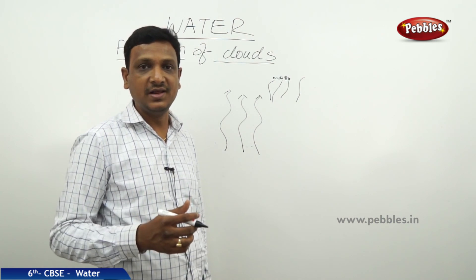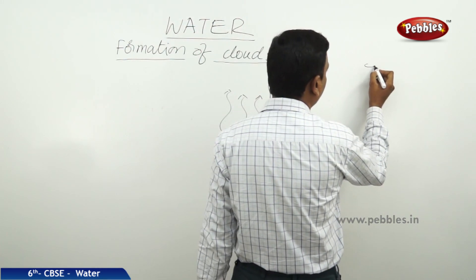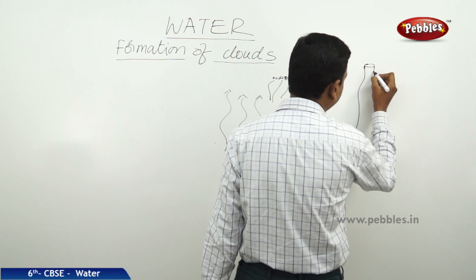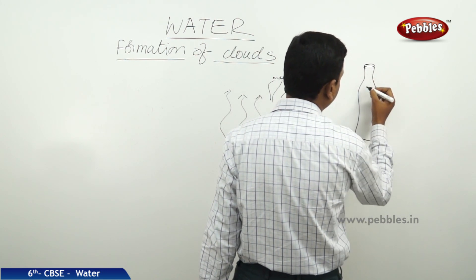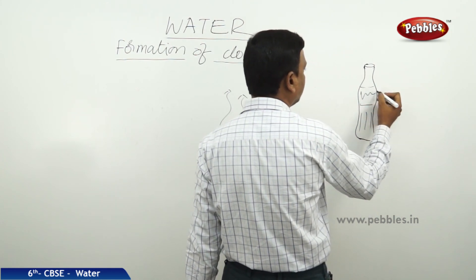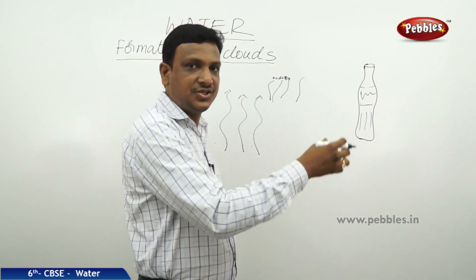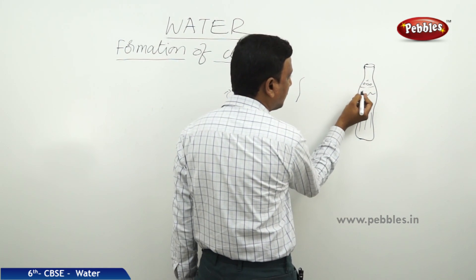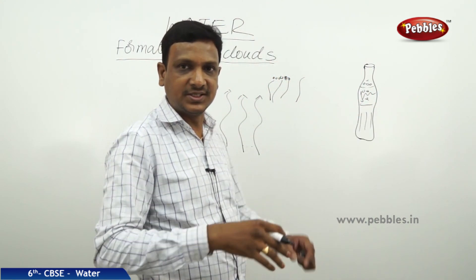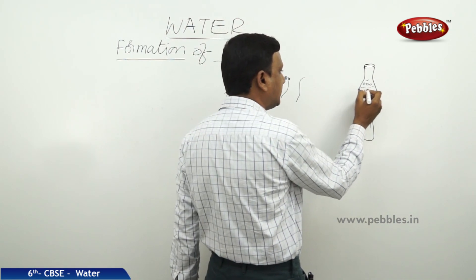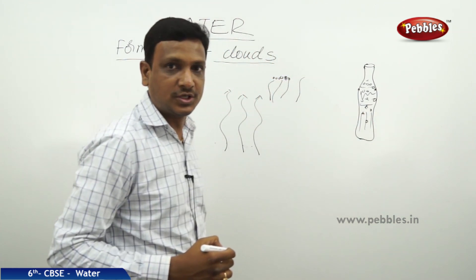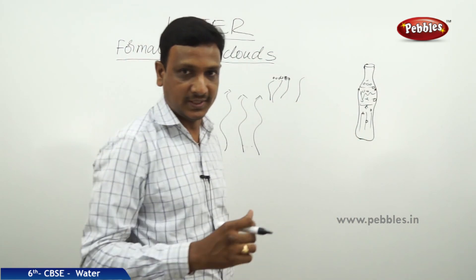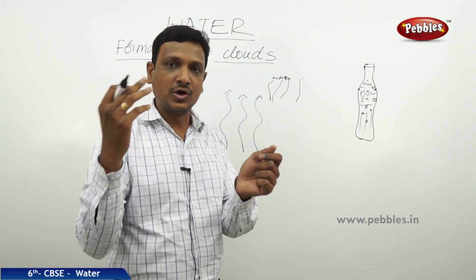How do we know this? We can understand it through an experiment. Have you seen what happens when you take a chilled soft drink bottle out of the refrigerator and leave it outside for some time? You find that water droplets collect on the outside of the bottle. The air touching the cool bottle surface has water vapour, and that water vapour condenses on the cool surface. Similarly, air carrying water vapour, when it reaches cooler heights, causes the water vapour to condense and form tiny droplets of water.